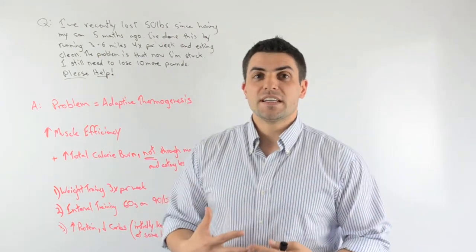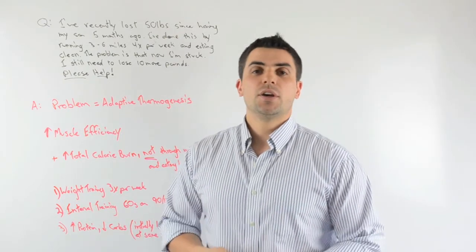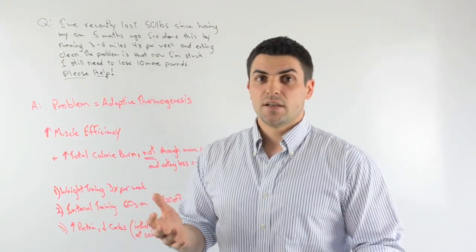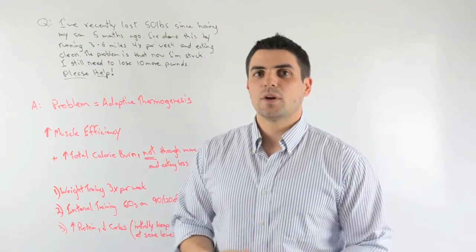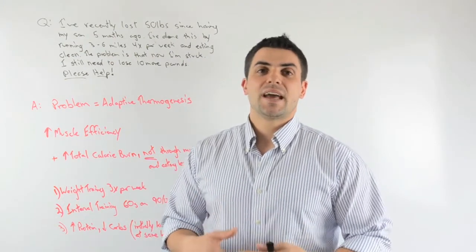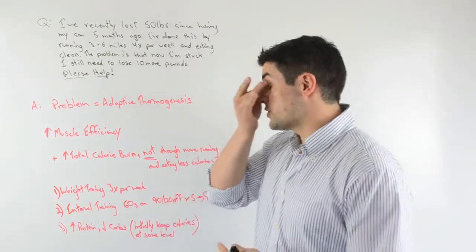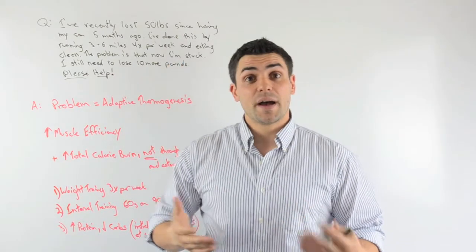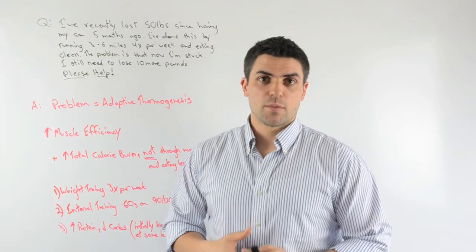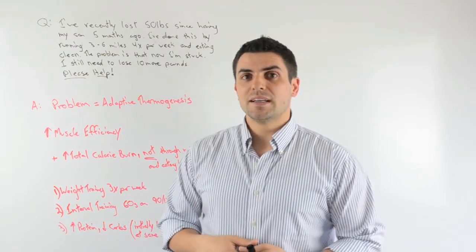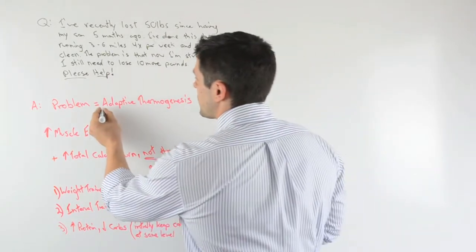So what's so frustrating here is we think that weight loss should just continue. Everyone always talks about you could lose, on average, two pounds per week, but this is an average. This is not necessarily every week. One of the things with weight loss is that even though some things work, they never work forever. And so in this case, for you, running three or six miles four times per week, that worked really well, but now that doesn't work anymore. And one of the reasons why that doesn't work is because of a biological phenomenon called adaptive thermogenesis.